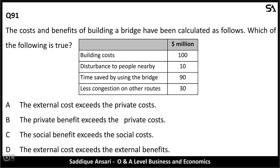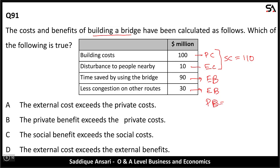Next: the costs and benefits of building a bridge have been calculated. Building cost is private cost, disturbance to people nearby is external cost — social cost = 110. Time saved by using the bridge and less congestion on other routes are external benefits; private benefit is not given so we assume zero. Social benefit = 120. Even assuming private benefit as zero, social benefit (120) is greater than social cost (110). If private benefit is greater than zero, social benefit increases further. So the decision should be taken and C is the correct answer: social benefit exceeds social cost.